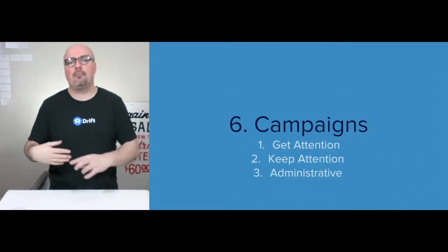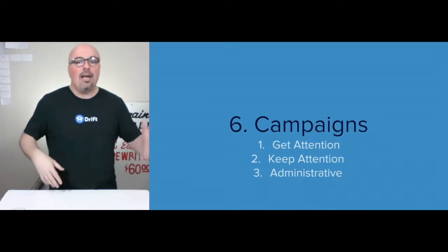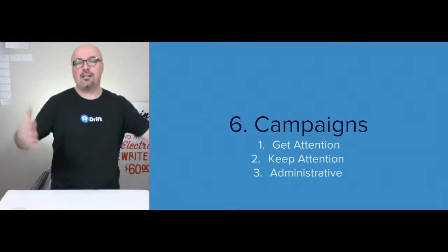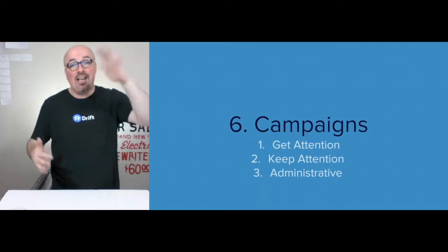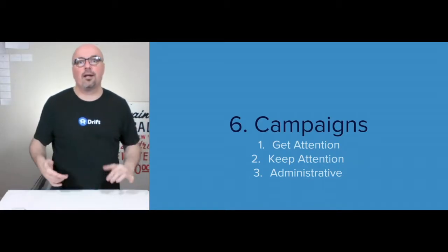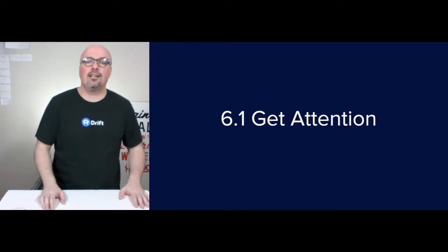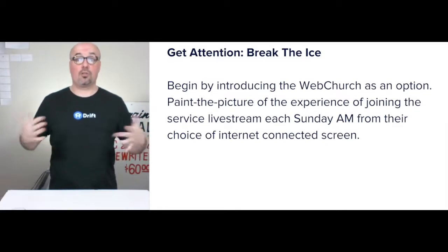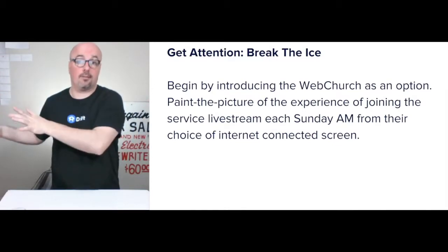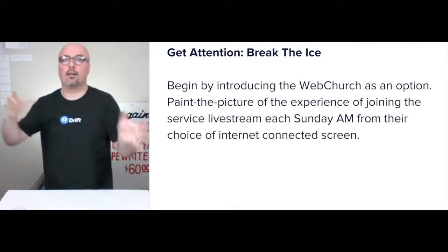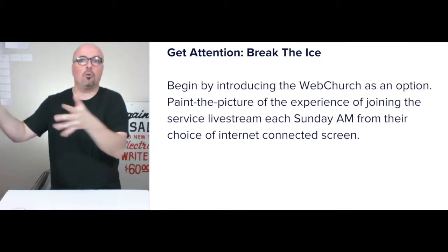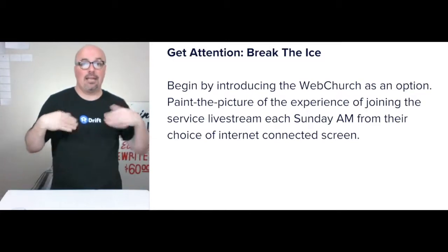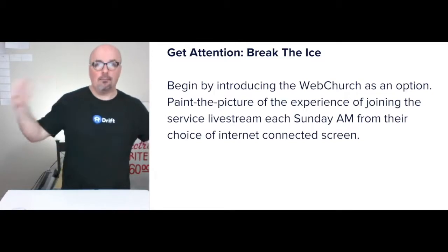Campaigns is the sixth step. I divide them into three types: get attention, keep attention, and administrative. Getting attention is talking to strangers, top of funnel. Keep attention is more bottom of funnel, and administrative is funnel integrity itself. For getting attention, the first one I would do is 'break the ice' — introduce the web church as an option from Grace Point Valdosta. If people in the Valdosta area want to come in person to the brick and mortar, awesome; otherwise, everyone else tunes into the live stream. The whole drive would be to get more eyeballs on the live stream.